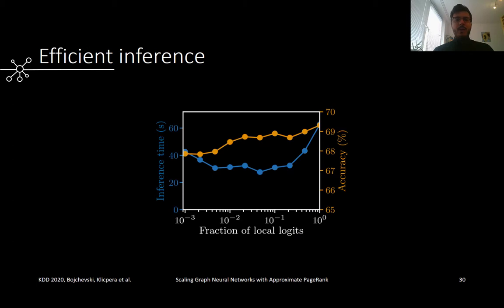Finally, we evaluate our sparse inference scheme. We see that by reducing the fraction of logits for which we compute the forward pass — note the logarithmic axis — we can significantly reduce runtime while maintaining high accuracy.